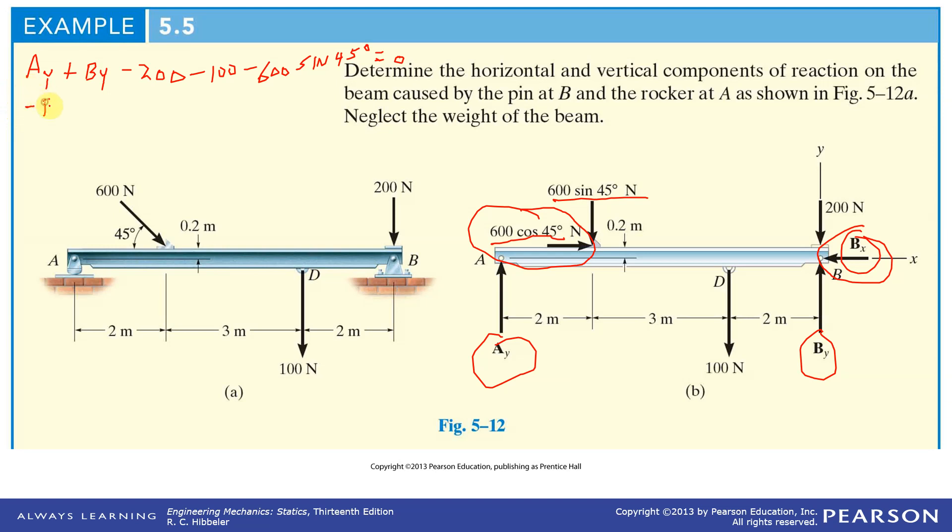So negative Bx plus minus 600 cosine 45 has to equal zero. We're taking forces directed to the right is being positive, 600 cosine 45 force is directed to the left being negative.